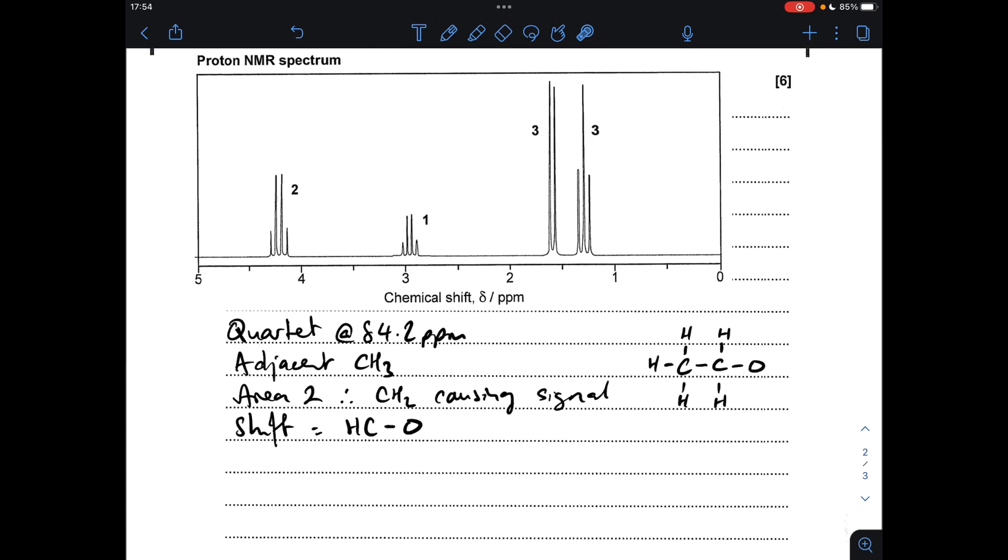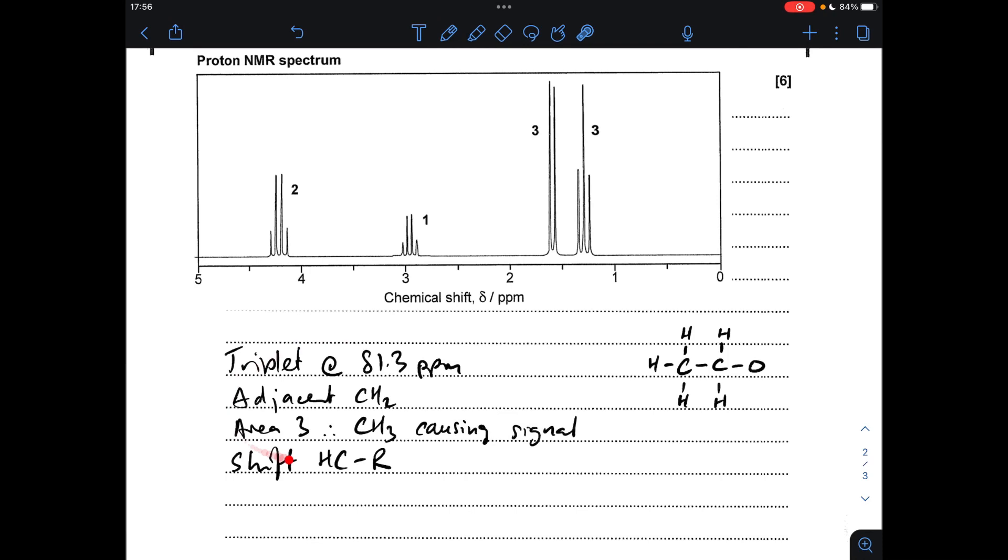The signal I'm going to look at next is the one that's due to these three protons here. Obviously there's three protons, so therefore it's going to have an area of 3. We've got two signals with an area of 3. They're adjacent to 2, so this is going to appear as a triplet. So it's this one here that's responsible for these protons here.